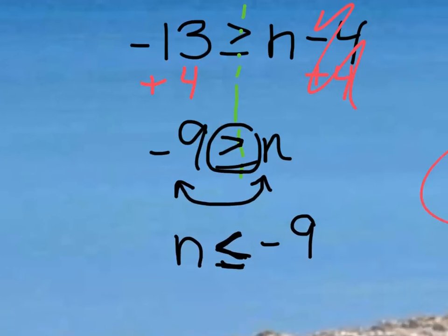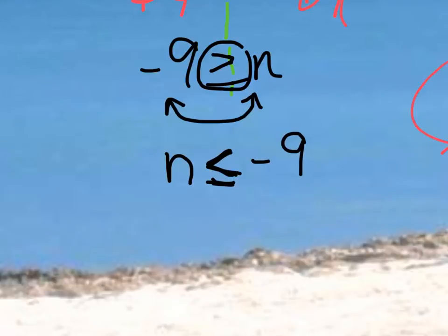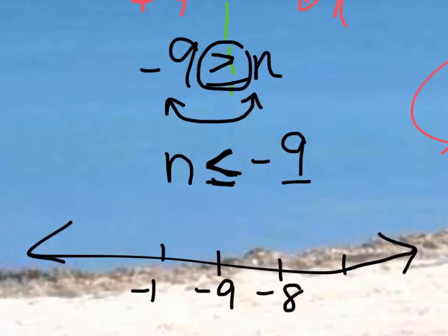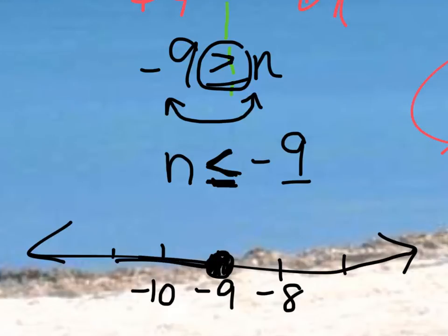Now that we have our inequality, we can graph it. I'm going to put negative 9 in the middle of my number line, add a couple other numbers — negative 10 would be over here. I'm going to draw my dot at negative 9, and since it's less than or equal to, I'm going to draw a solid dot with the arrow going to the left.